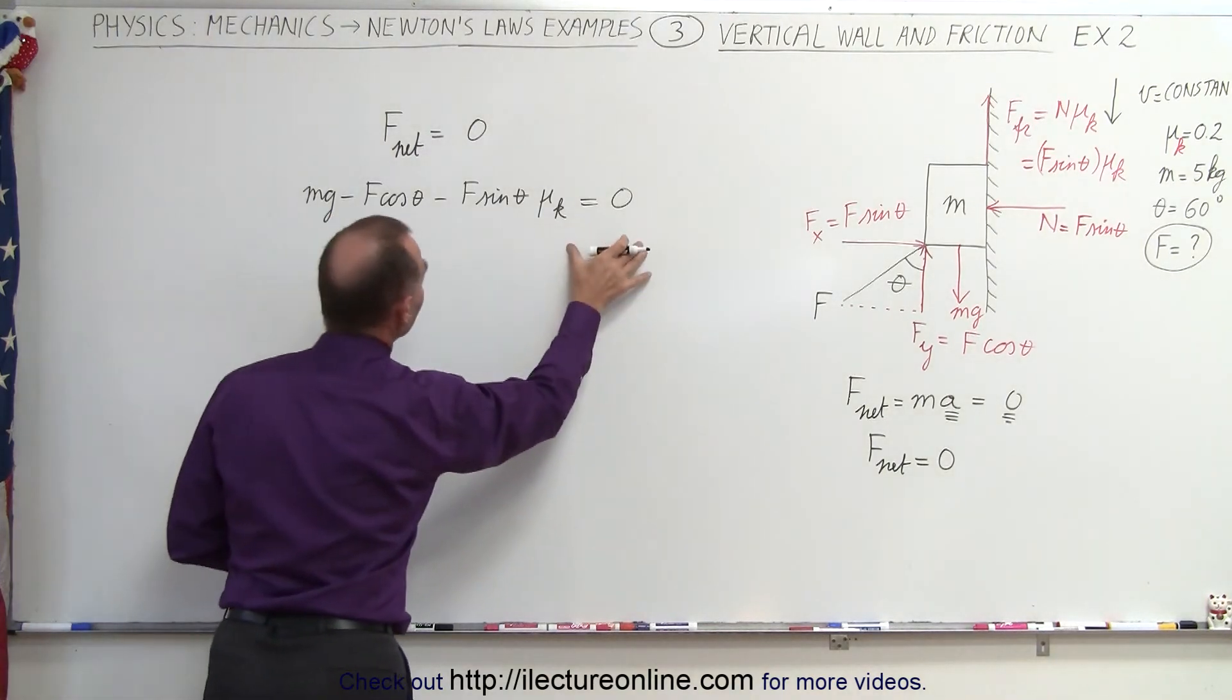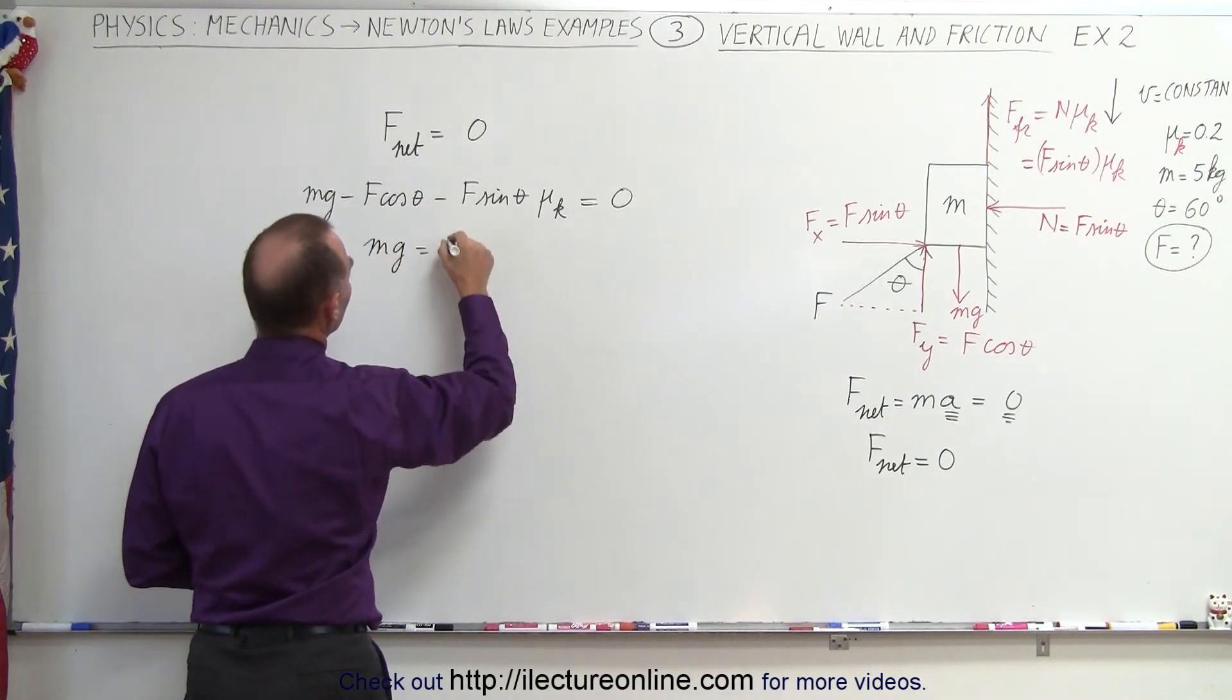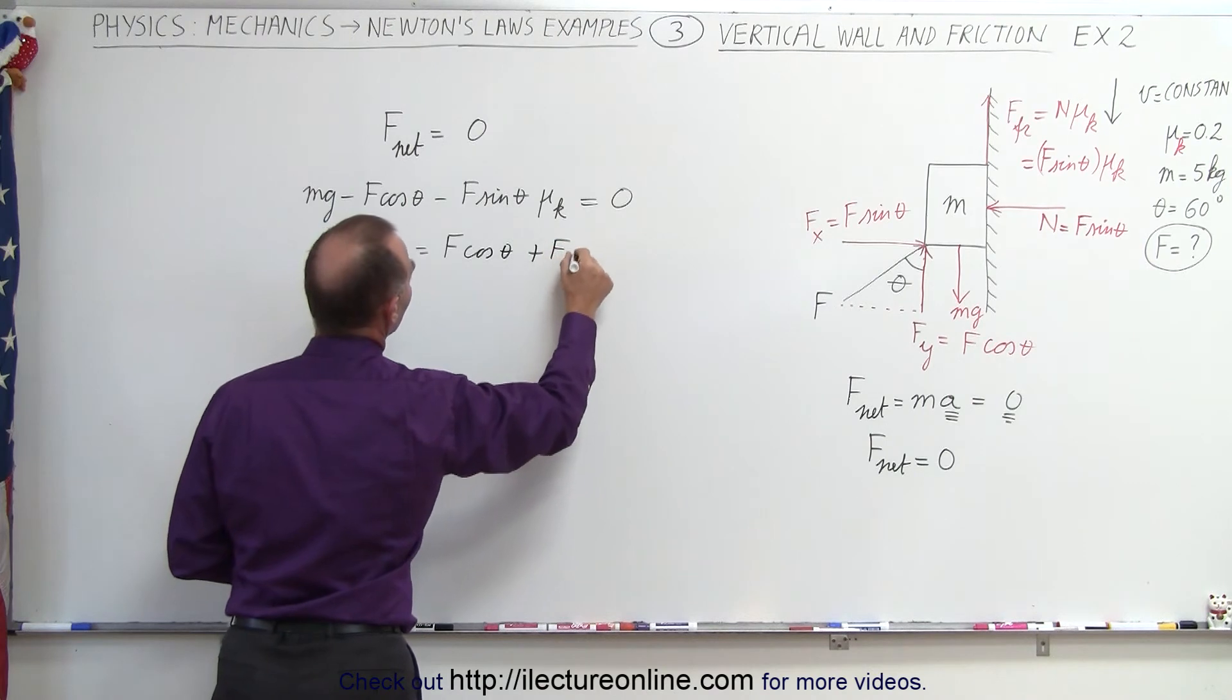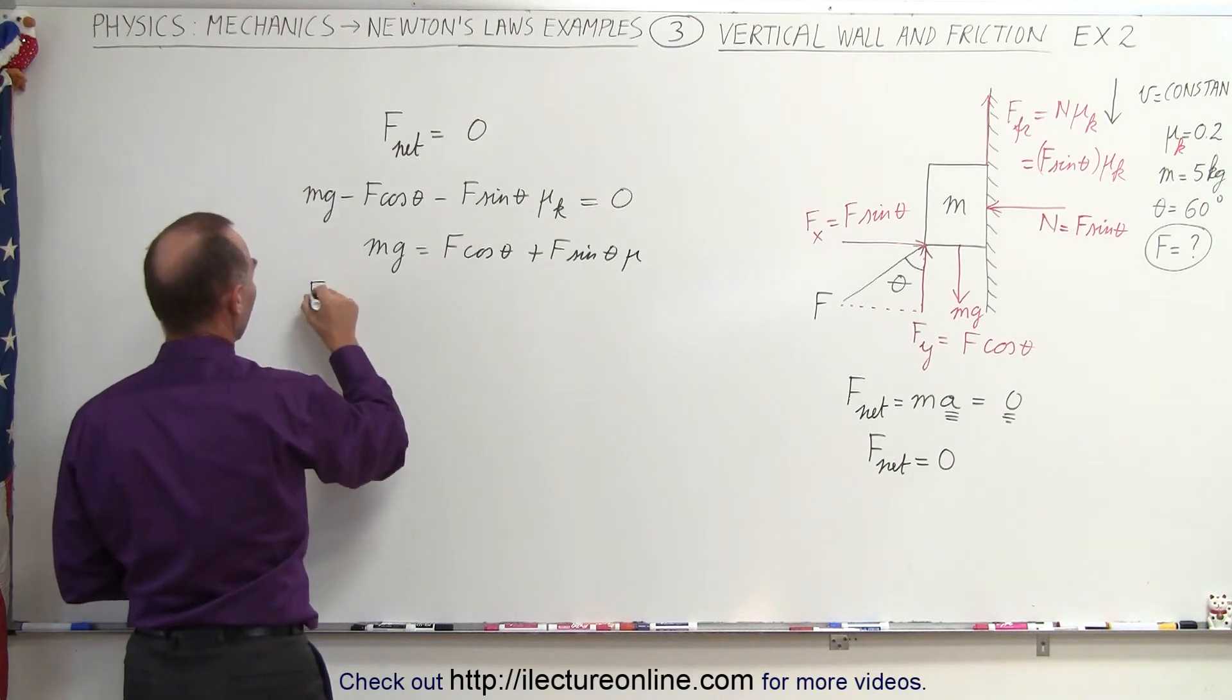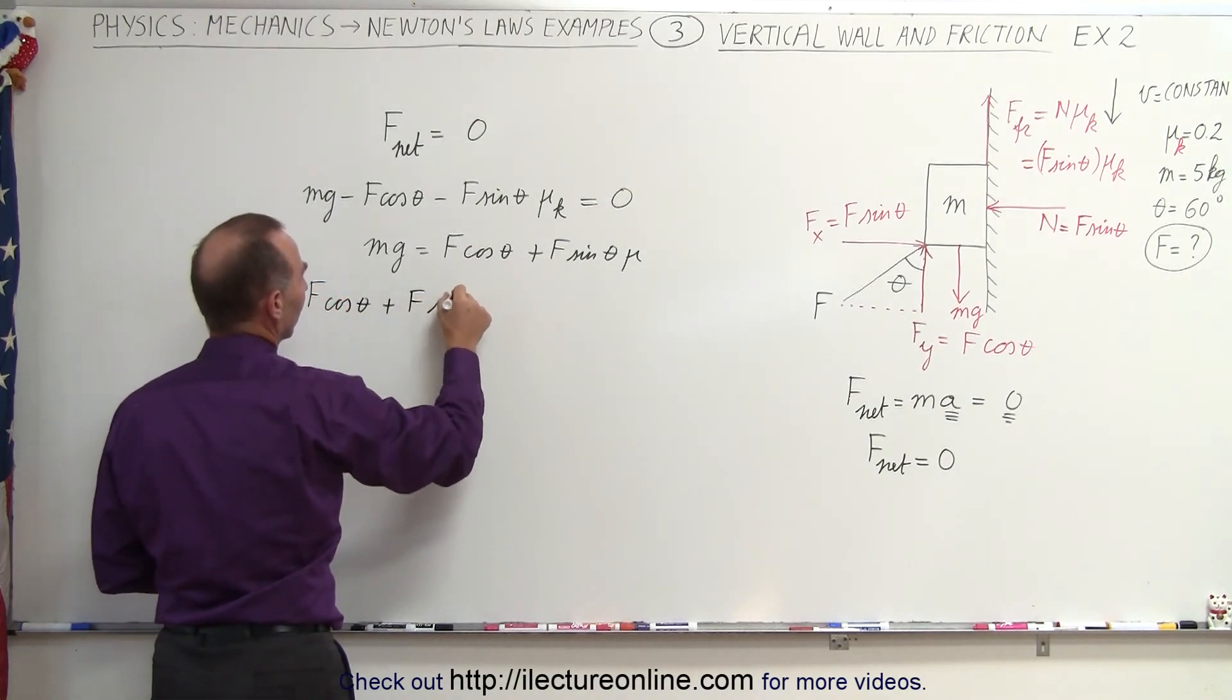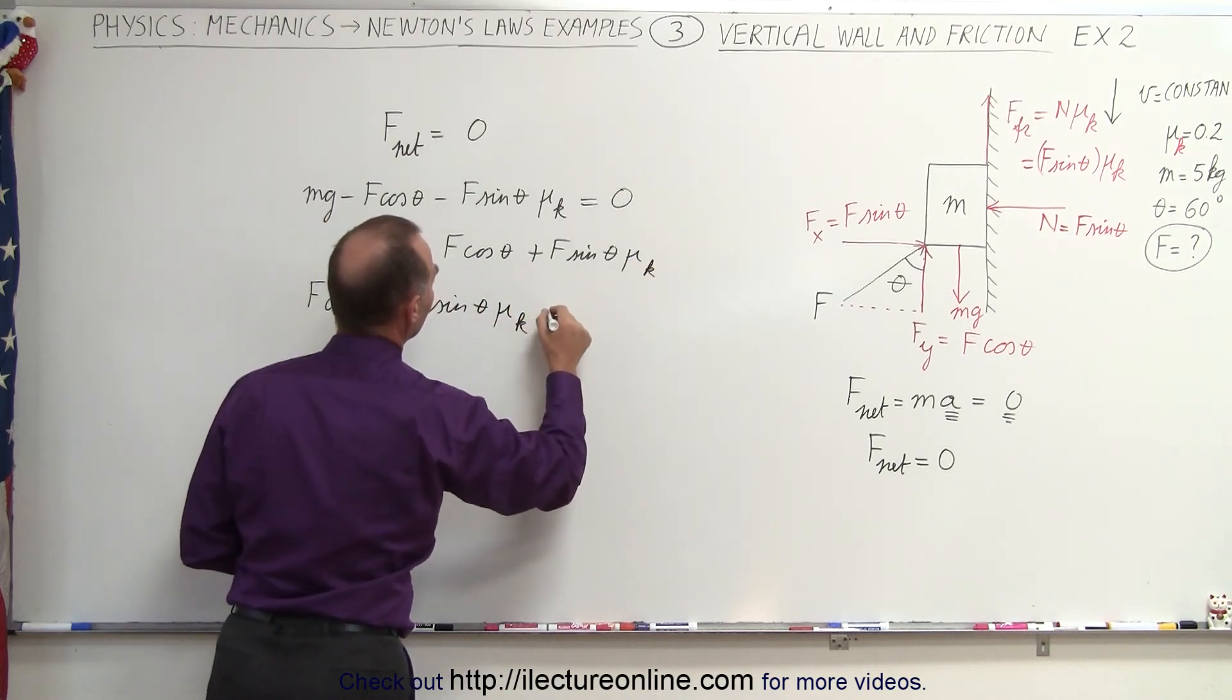Okay, let's move this to the right side. So we have mg equals, these become positive, f times the cosine of theta plus f times the sine of theta times mu. Since we're looking for f, we're going to turn the equation around. f times the cosine of theta plus f times the sine of theta times mu, and I should probably write mu sub k, equals mg.